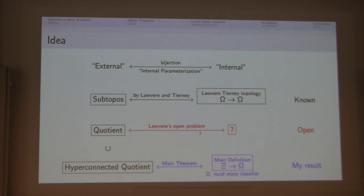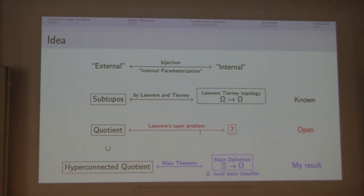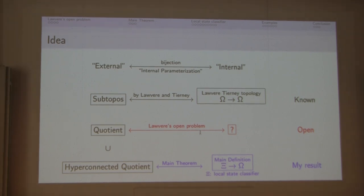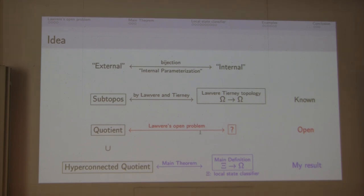The theorem states that there is a bijective correspondence. Sub-toposes are defined as an embedding geometric morphism into a given topos, so it is kind of an external thing. Compared to that, Lawvere-Tierney topology is defined as an internal seminal homomorphism which is idempotent on the sub-object classifier, so it is a morphism in the topos — that is the reason why I call it an internal thing.